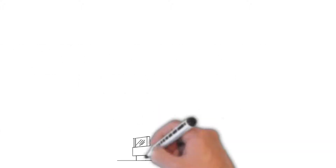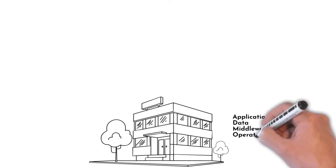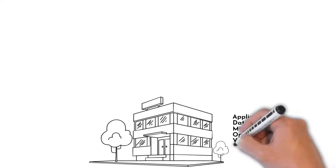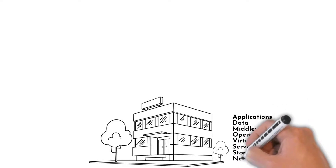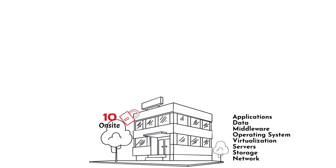When we look at on-site, there are eight primary things you would support within an on-site infrastructure: applications, data, middleware, operating system, virtualization, server storage, and network. Additional items not listed include your firewall, boundary, and caching devices. That's why a score of 10 has been assigned to on-site — 10 being the most costly to run your infrastructure, as all eight items provide services to your customers.